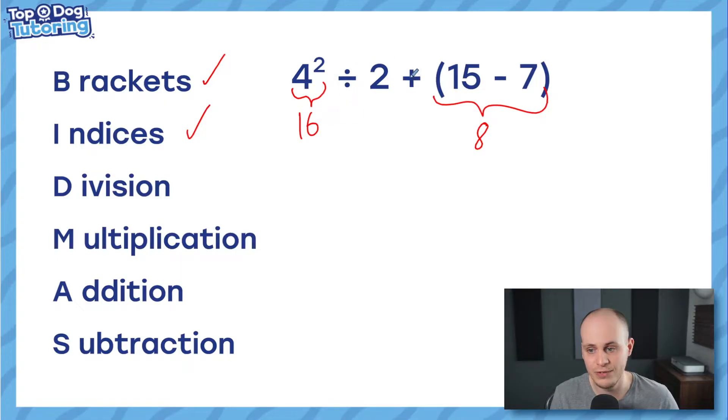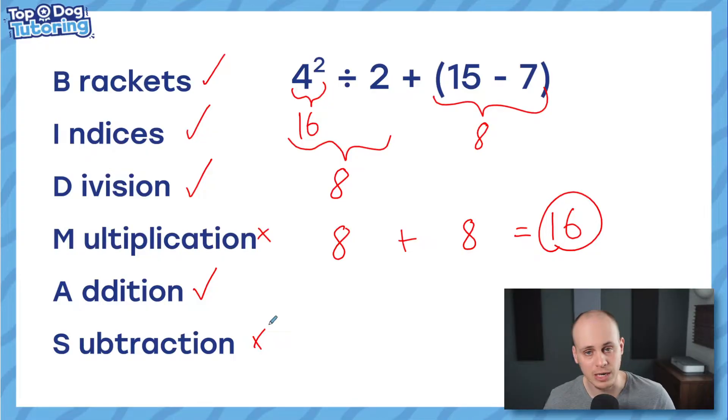So, division comes up next. Let's do that. 16 divided by 2. So, I'm going to replace this part here, 16 divided by 2, with its answer, which is 8. Now, it's getting a bit confusing. So, I'm just going to rewrite down below the information I've got left. I've got 8 plus 8. That's all I've got left. There's no multiplication to worry about, but I must now do this addition. 8 plus 8, of course, gives me my final answer now because there's no operations left of 16 and there was no subtraction to worry about.